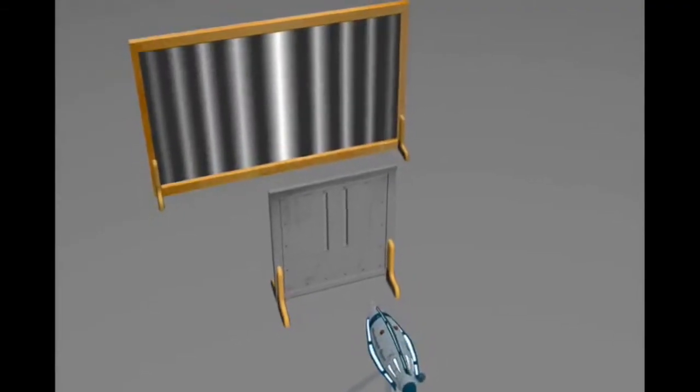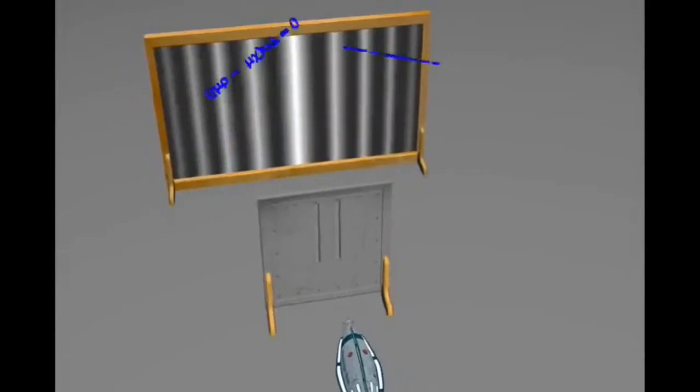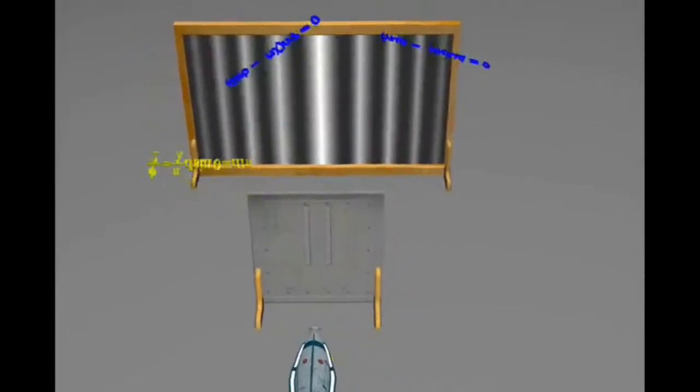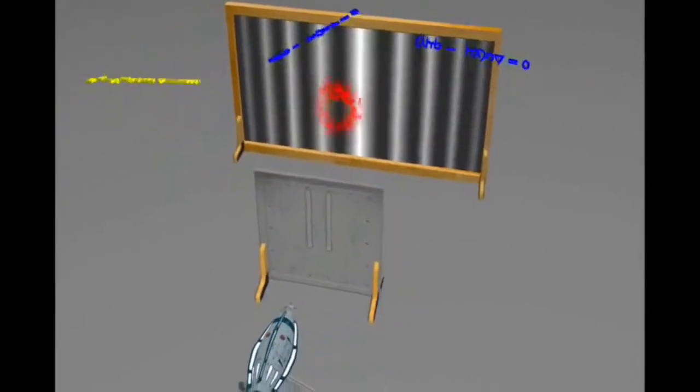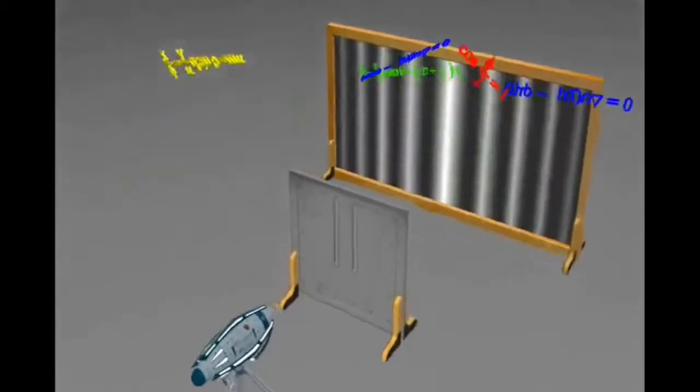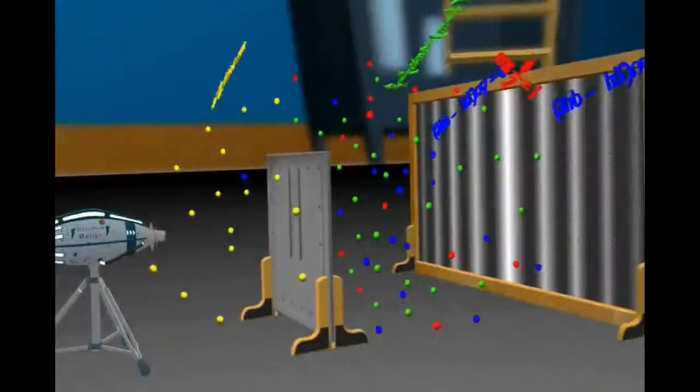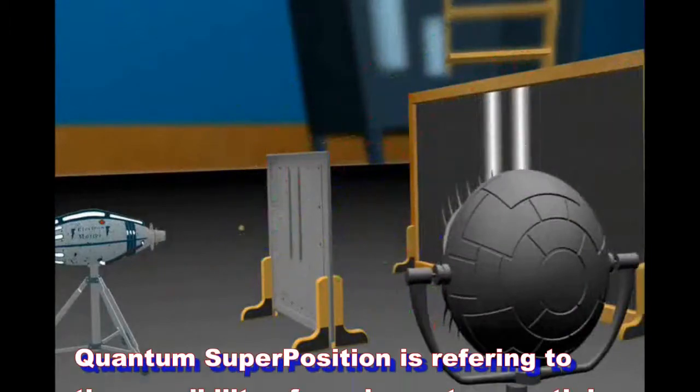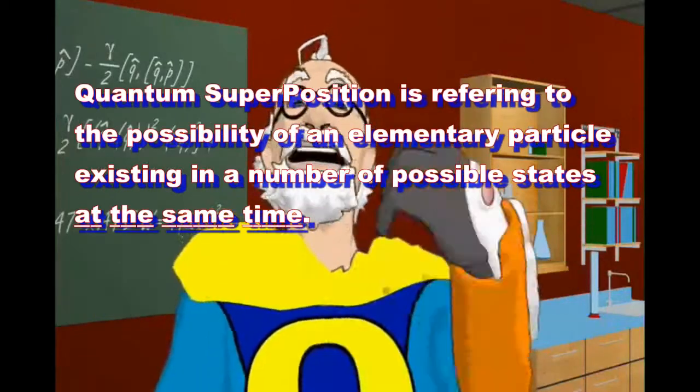But, mathematically, it's even stranger. It goes through both slits, and it goes through neither. And it goes through just one, and it goes through just the other. All of these possibilities are in superposition with each other. But, physicists were completely baffled by this.